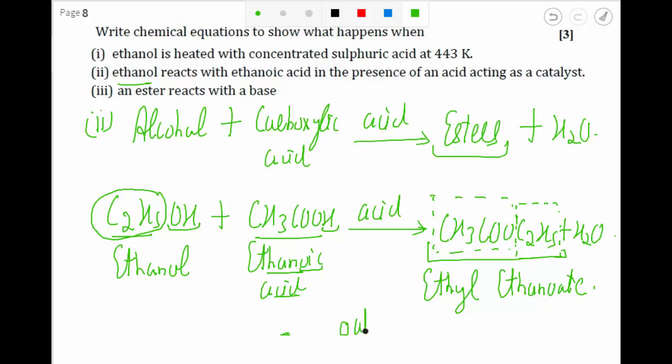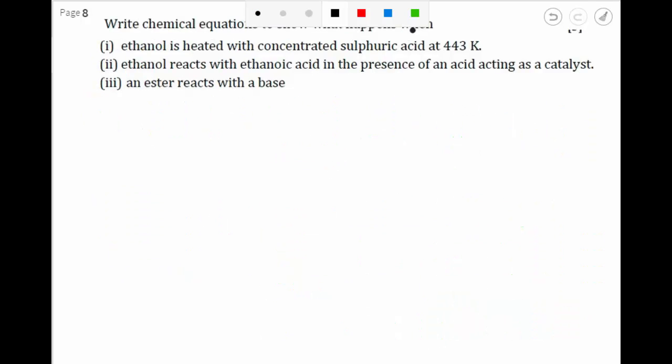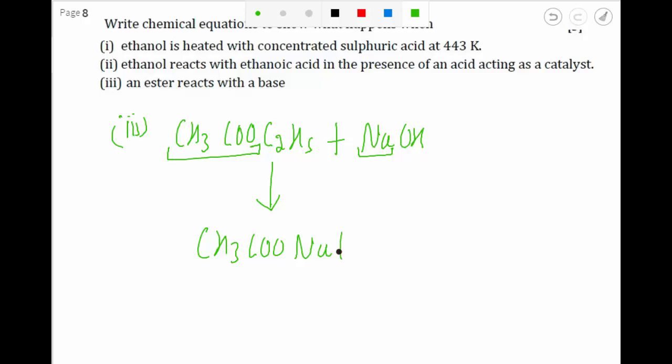Let's go to the third part. In the third part, I have an ester with a base. Let's take a simple ester, CH3COOC2H5, the one which was formed in the second part. It reacts with base - let's take a base NaOH. So in this case, what will happen is this CH3COO will react with this Na, so hence it will result in the form of CH3COONa. And this C2H5 will combine with this OH ion to give C2H5OH.